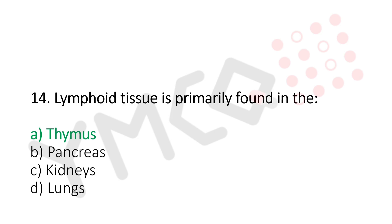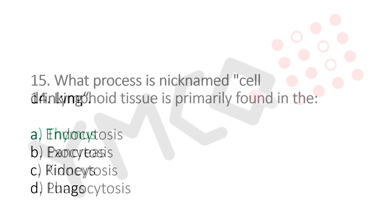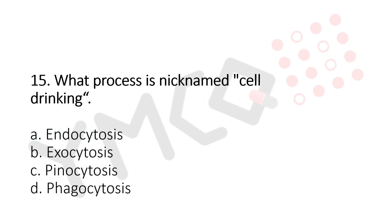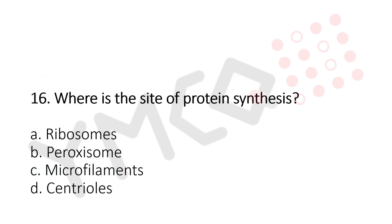The answer to Question 14 is Option A, thymus. Question 15: What process is nicknamed 'cell drinking'? Option A: endocytosis. Option B: exocytosis. Option C: pinocytosis. Option D: phagocytosis. The answer is Option C, pinocytosis.